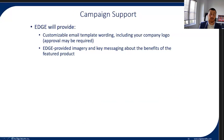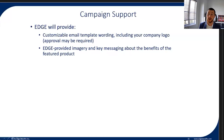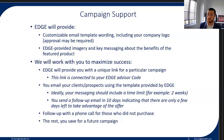Essentially how the campaign works: we'll provide a customizable email template with the wording on why it's important to look at that type of coverage, incorporate your company logo, include the key messaging about the benefits of the featured product. We're always open to modifying it and at the end of the day, your name is going to be on it — so the final customizations rest with you. We'll then build a unique link for that particular campaign connected to your advisor code.